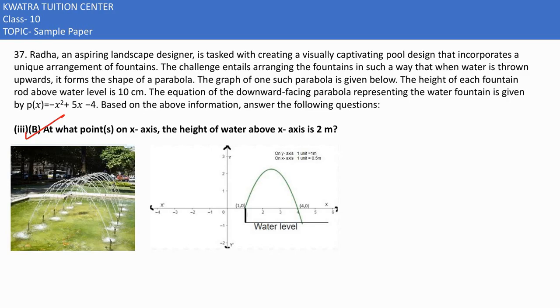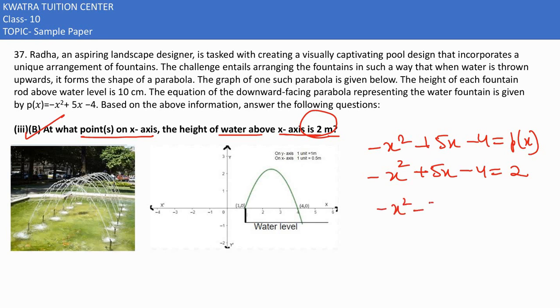Part B asks: at what points on the x-axis is the height of water above x-axis 2 meters? The polynomial -x² + 5x - 4 equals 2, since they're asking for the height to be 2 meters. Converting the equation: -4 minus 2 becomes -6, so we have -x² + 5x - 6 = 0.